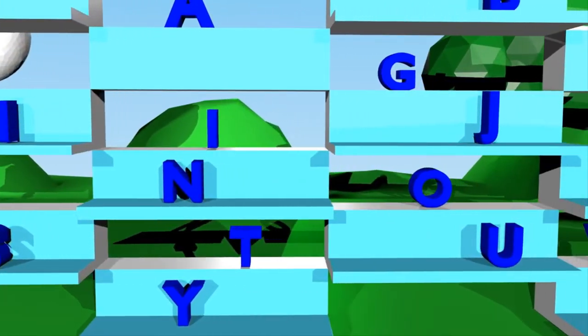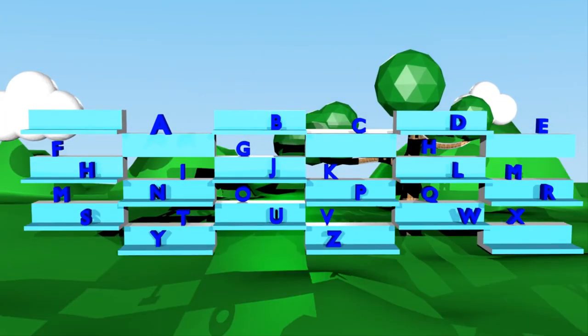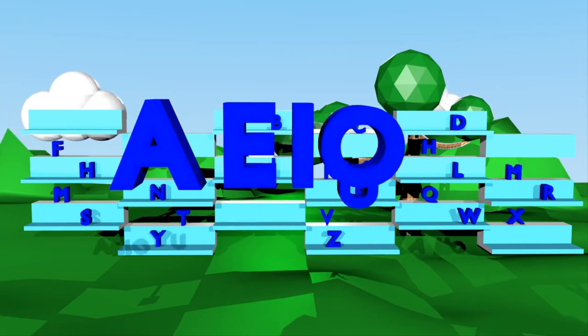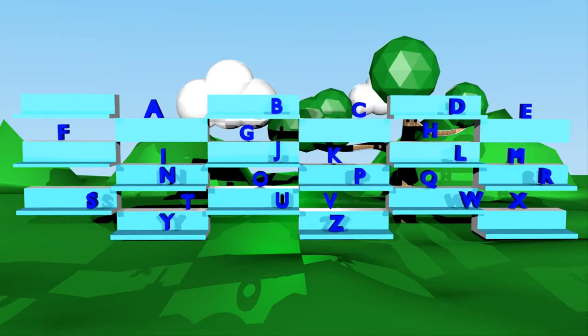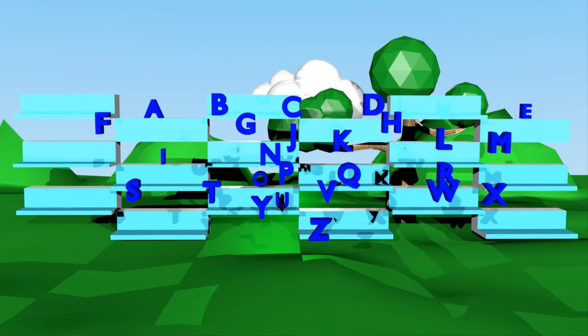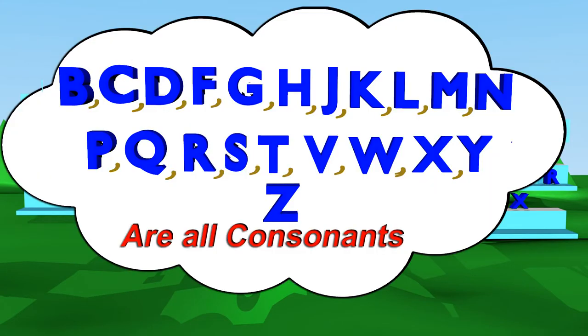Vowels and consonants. There are 26 letters in the English alphabet. Letters A, E, I, O, U are vowels. All letters other than vowels are called consonants.